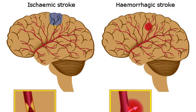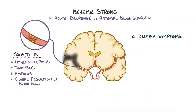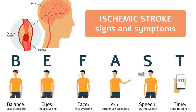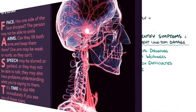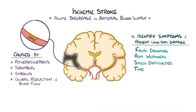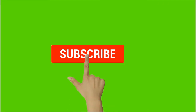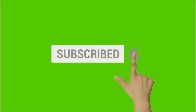Quick recap: an ischemic stroke occurs when there is an acute decrease in arterial blood supply, due to atherosclerosis, a thrombus, an embolus, or a global reduction in blood flow. The goal is to identify symptoms and reestablish blood flow to prevent long-term damage. To remember this, use the acronym FAST: Facial Drooping, Arm Weakness, Speech Difficulties, and Time. Please subscribe and share with your contacts to help make the health of our world a better place. Thank you from SmartDX Media.